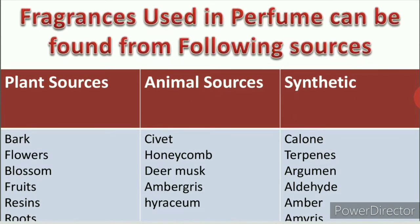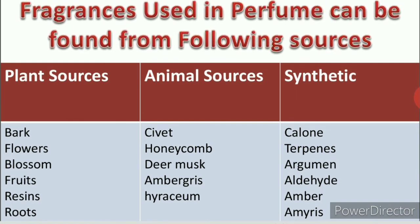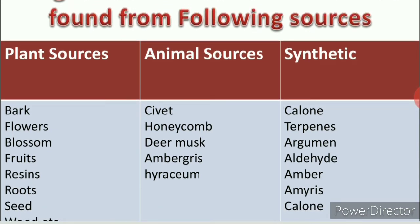Fragrances used in perfumes can be formed from the following sources: plant sources, animal sources, and synthetic sources. Plant sources include bark, flowers, blossoms, fruits, resins, and roots. Animal sources include civet, honeycomb, deer musk, ambergris, and castoreum. Synthetic sources include terpenes, aldehyde, amber, and related synthetic compounds.